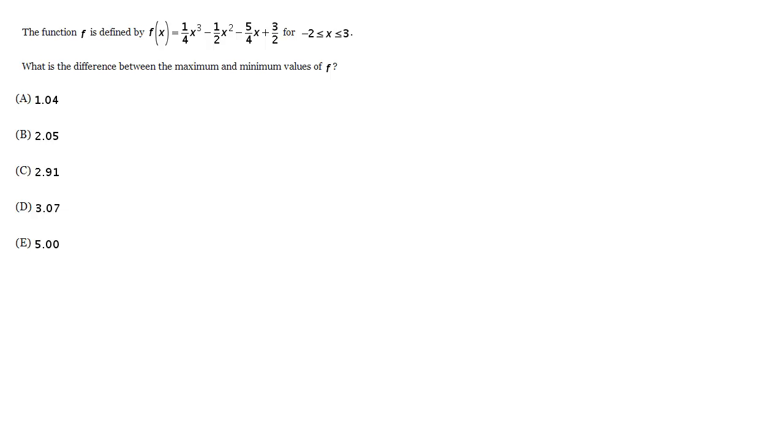The function f is defined by that. What is the difference between the maximum and minimum values of f given that we have this domain of negative 2 to 3?